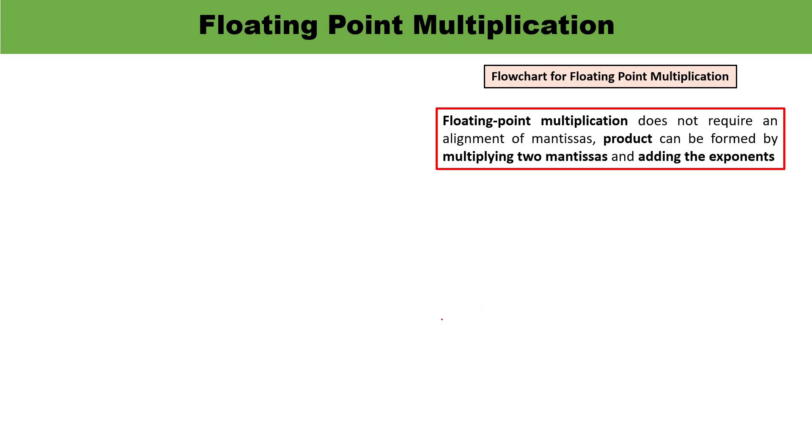Now we have to understand how to multiply two floating point numbers. An important point: when multiplying floating point numbers, there is no requirement of alignment of mantissas. The product can be formed just by multiplying two mantissas and adding the exponents. No comparison of exponents or alignment of mantissas is required.